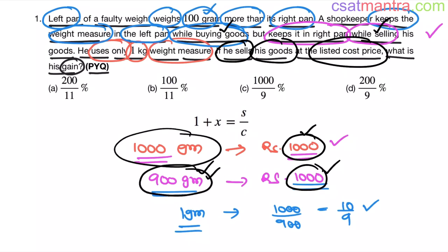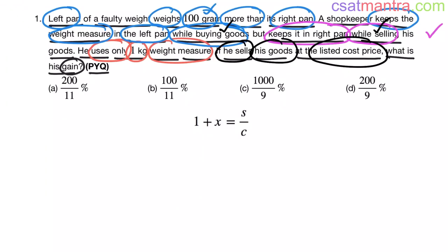See, this sentence means he is not manipulating the price. He is selling at the same price which he bought. But he is manipulating the weights. Understand? So we have cost price as 10 by 11 and selling price as 10 by 9. Substituting these values in this equation.